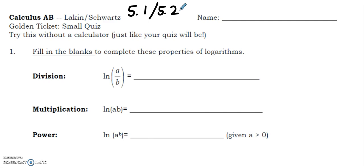First, fill in the blanks to complete the properties of logarithms. This is pre-calculus knowledge. The natural log of a divided by b can be split up into the natural log of a minus the natural log of b. Natural log of a times b can be split up into the natural log of a plus the natural log of b.